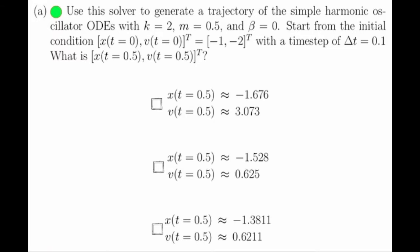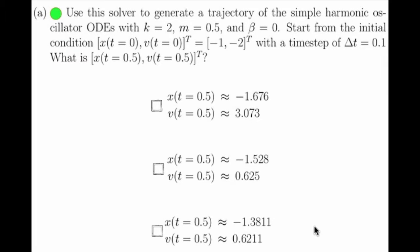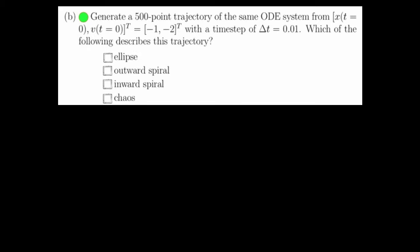Part A asks us to find what x and v will be at time 0.5, starting from negative 1, negative 2, using a time step of h equals 0.1, and the given parameters. If we do this experiment, using the code I just showed, you get x equals negative 1.3811 and v equals 0.6211 at time 0.5.